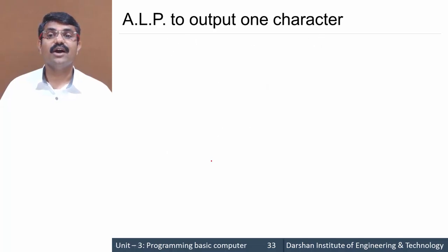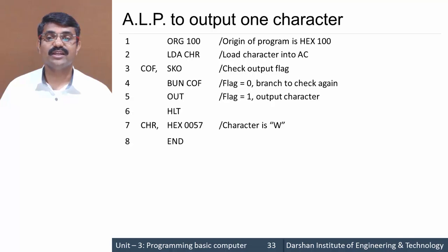In that case, the program loads a character from memory to accumulator using the LDA instruction. CHR is having our data - CHR has address data 0057, which we are terming to be character W, so it gets loaded into the accumulator.